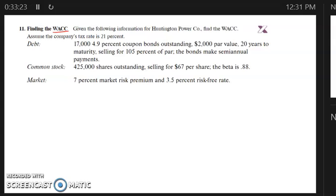Given the company's tax rate is 21%, the debt: there's 17,000 4.9% coupon bonds outstanding with a $2,000 par value and 20 years to maturity, selling for 105% of par. The bonds make semiannual payments. So first thing to do is we're going to calculate the yield to maturity on the bonds.